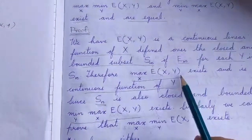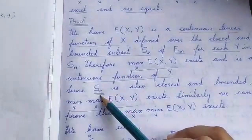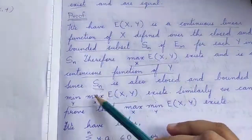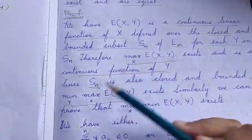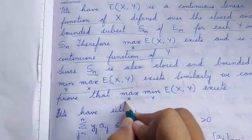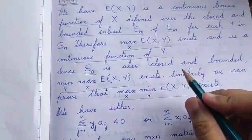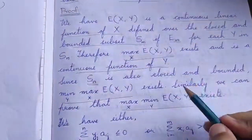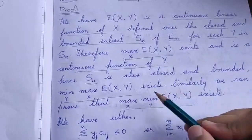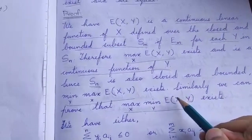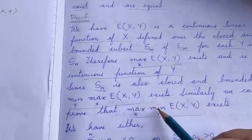Since maximum over x E of xy is continuous and defined over the closed and bounded subset Sn, we have that minimum over y maximum over x E of xy exists. Similarly, we can prove that maximum over x minimum over y E of xy also exists. For that, we first consider E of xy as a function of y leaving x fixed, and then consider minimum over y E of xy as a function of x. So we have proved the existence of these two quantities.